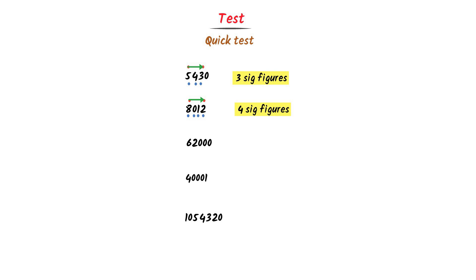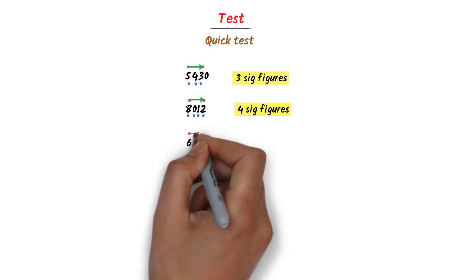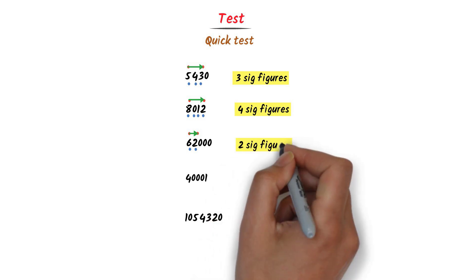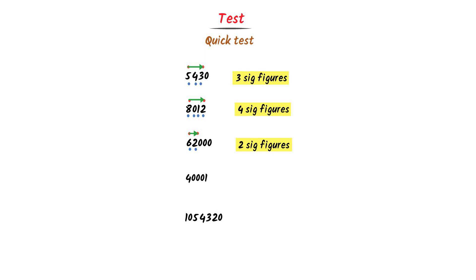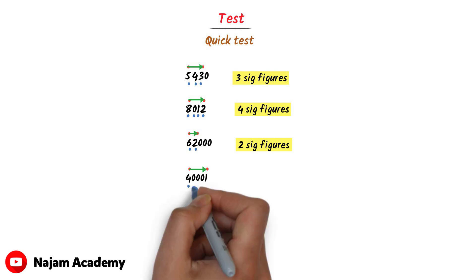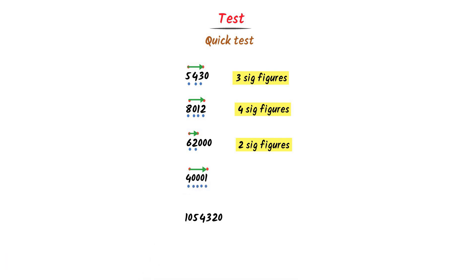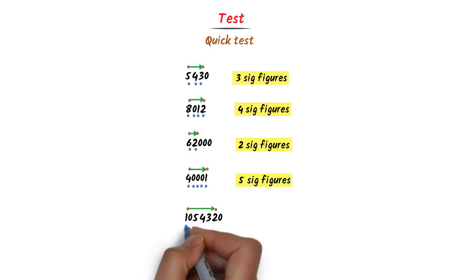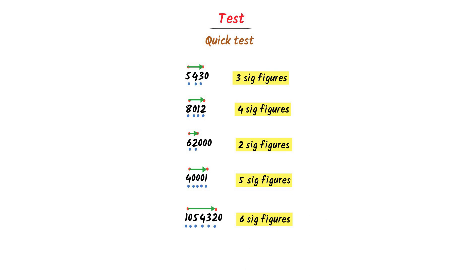In case of the third number, the first non-zero digit is 6 and the last non-zero digit is 2. I go from 6 to 2. Hence there are 2 significant figures. In case of the fourth number, the first non-zero digit is 4 and the last non-zero digit is 1. I go from 4 to 1: 1, 2, 3, 4, 5 — there are 5 significant figures. In case of the fifth number, the first non-zero digit is 1 and the last non-zero digit is 2. I go from 1 to 2: 1, 2, 3, 4, 5, 6 — there are 6 significant figures present in this number.